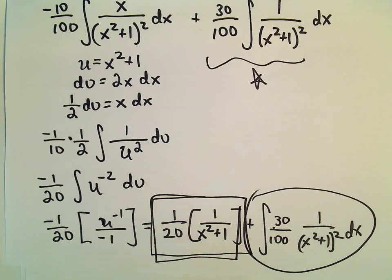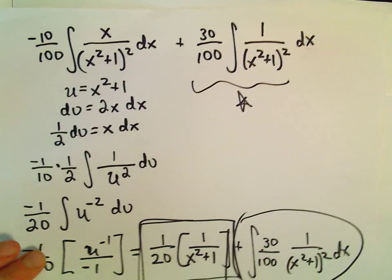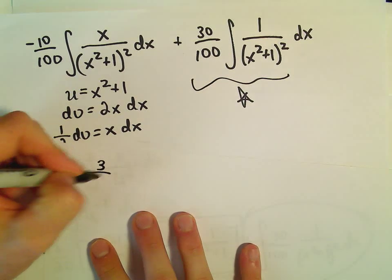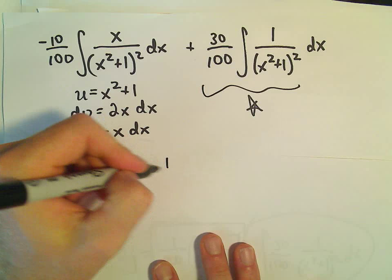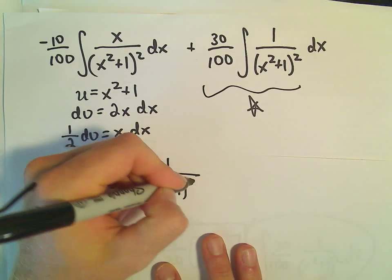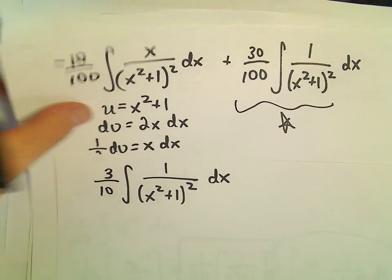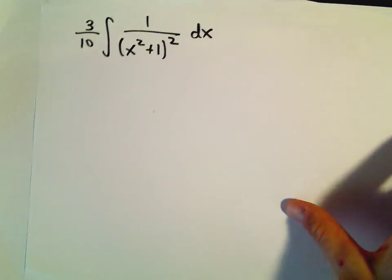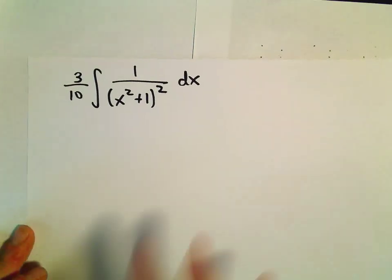Let's integrate this last piece, and then we can stick everything back together for the solution. We have 3 over 10 times the integral of 1 over x squared plus 1 quantity squared dx. To integrate this part, we do what's called a trig substitution — a different type of substitution where we turn this back into a trig integral.